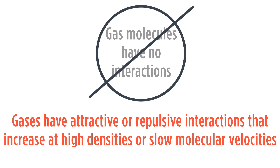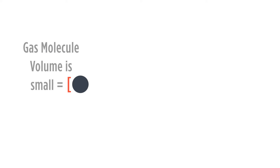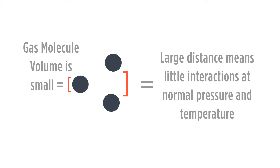If we think about a molecule of gas, it's going to have some volume. Often that volume is going to be relatively small. Gases are very, very far away from each other in the volume they contain. So therefore, the assumption that they would have very little interactions is a somewhat correct process if we're dealing with normal pressures and temperatures.